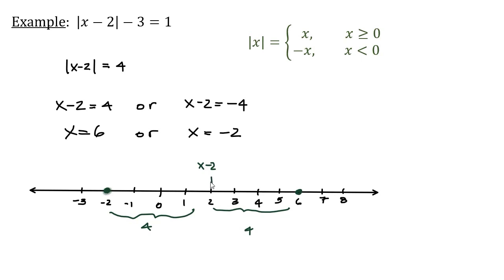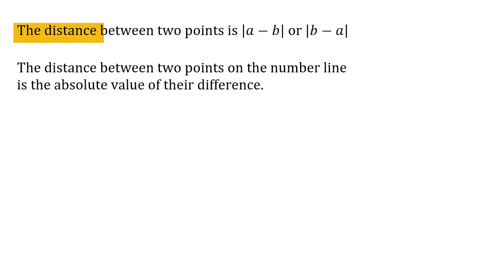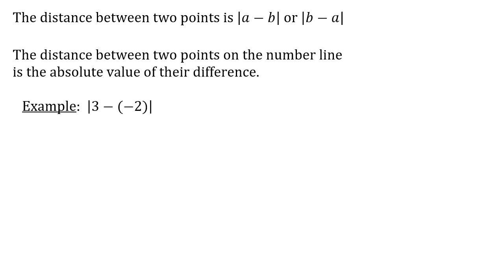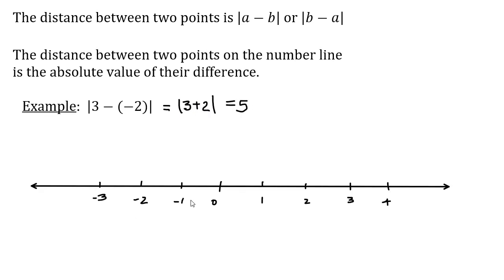We'll note that the distance between two points is the absolute value of a minus b, where a and b are the points, or the absolute value of b minus a. In words, the distance between two points on the number line is the absolute value of their difference. So for example, if I'm finding the absolute value of x minus negative 2, with x equal to 3, this is going to be the absolute value of 3 plus 2, which is 5. So I'm finding the distance between 3 and negative 2 — if I count that, it's 1, 2, 3, 4, 5.